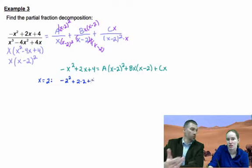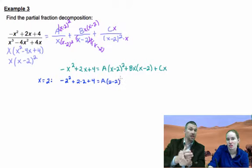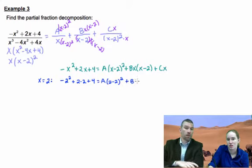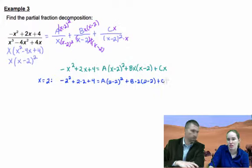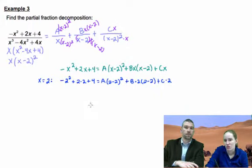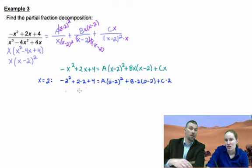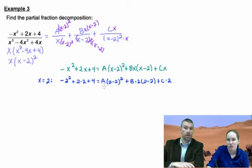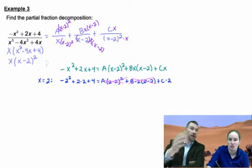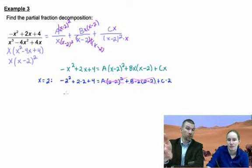When you put a two in for x, you're eliminating one of our possible variables because we're saying x is two. A and B are gone, so at any time you can eliminate two of those terms on your first step, that's a great thing to do.